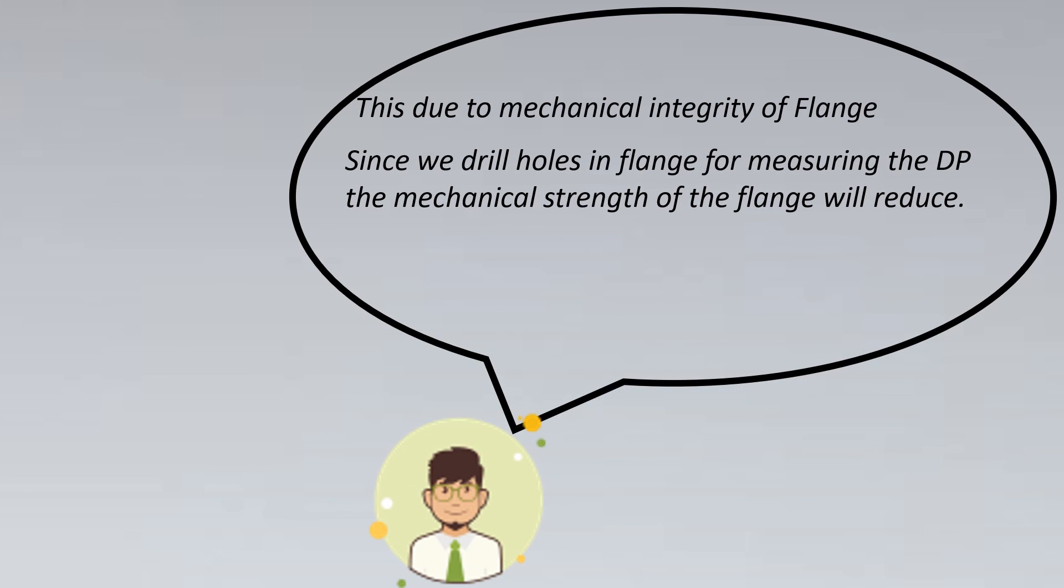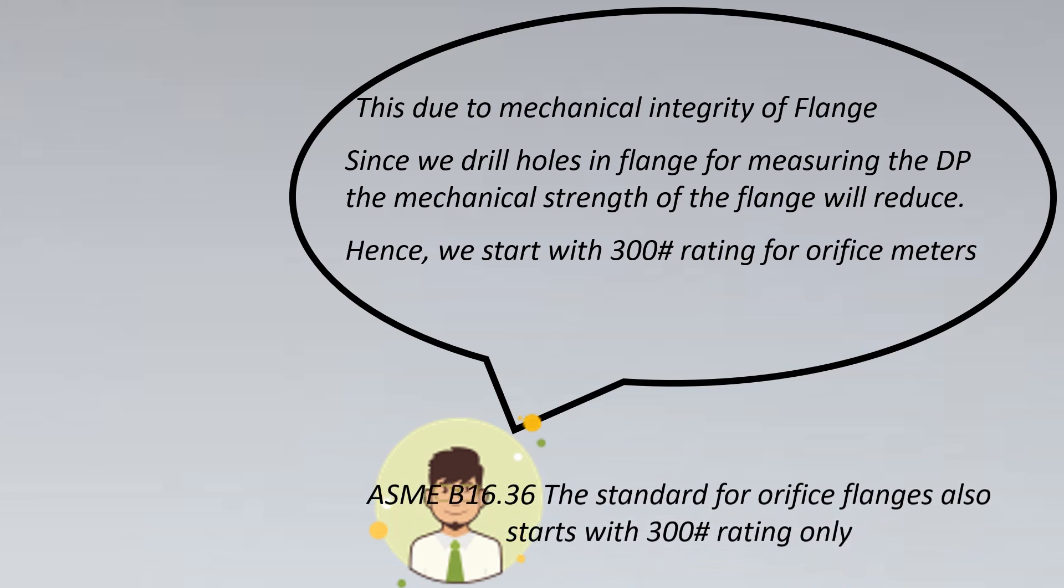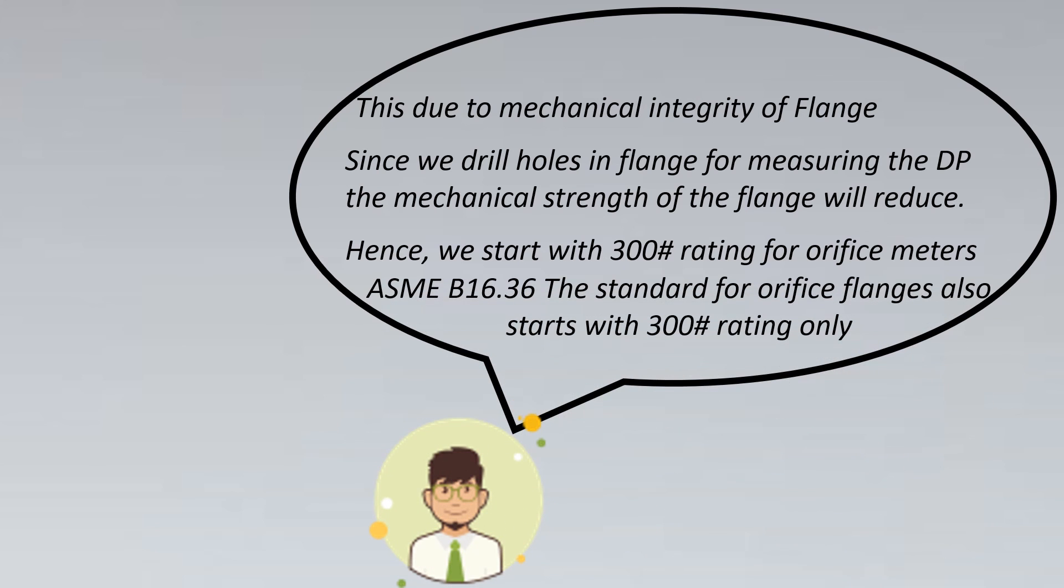Second is, since we drill holes in the flanges for measuring this DP, the overall strength of your flange will reduce dramatically, and thus 150 rating might not be suitable. Hence we usually start with 300 rating for orifice meters. But for restriction orifice meters where there is no tapping to be drilled, you might see 150 rating for those cases also. If you want to prove the standard which is ASME B16.36, the standard for orifice flanges also starts with 300 rating only, so we can have a standard which supports this understanding.